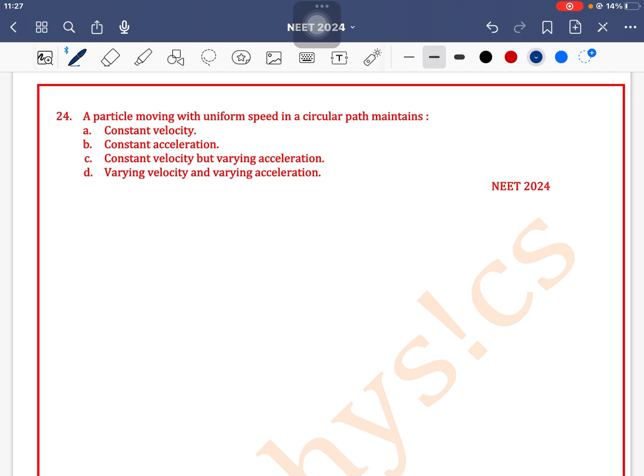A particle moving with uniform speed in a circular path maintains constant speed. Let's say a particle is performing circular motion with uniform speed. The particle is rotating in an anti-clockwise direction. At each and every point, speed is constant, but the direction of speed is continuously changing.